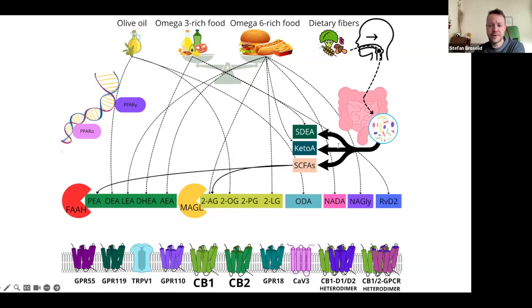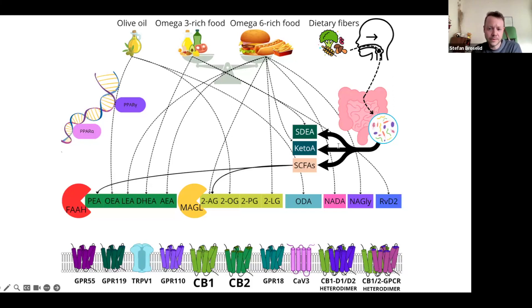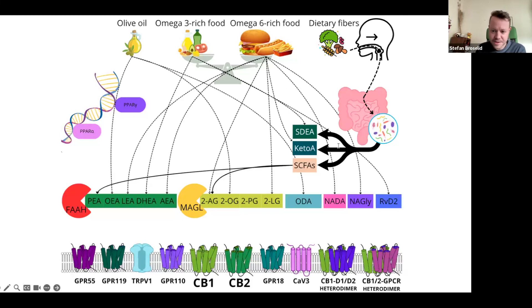Shifting our focus to dietary fibers and their importance in health: dietary fibers are not just important for our intestines — they're also metabolized by our gut microbiome into short-chain fatty acids such as acetate, propionate, and butyrate. These short-chain fatty acids play a significant role in interacting with the ECBome, helping to regulate inflammation, energy balance, and even mood, and importantly, levels of several ECBome mediators including 2-AG and PEA. SGEA and ketoA are omega-3 and omega-6 derived ECBome mediators produced by our gut bacteria, as long as we have the proper tenants in our microbiome.